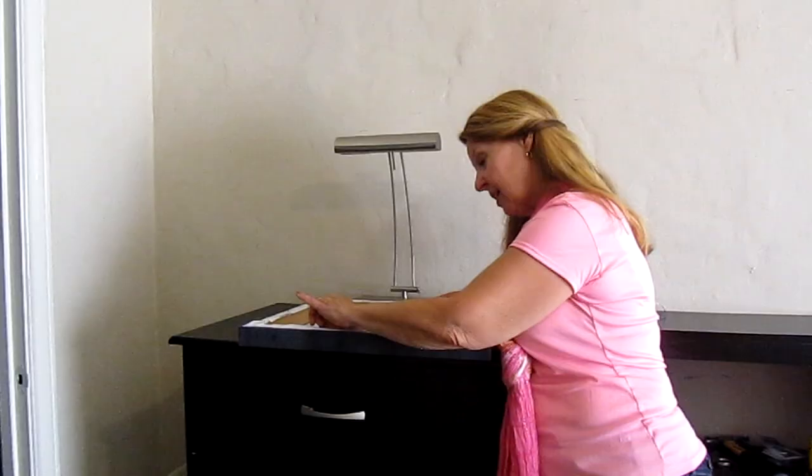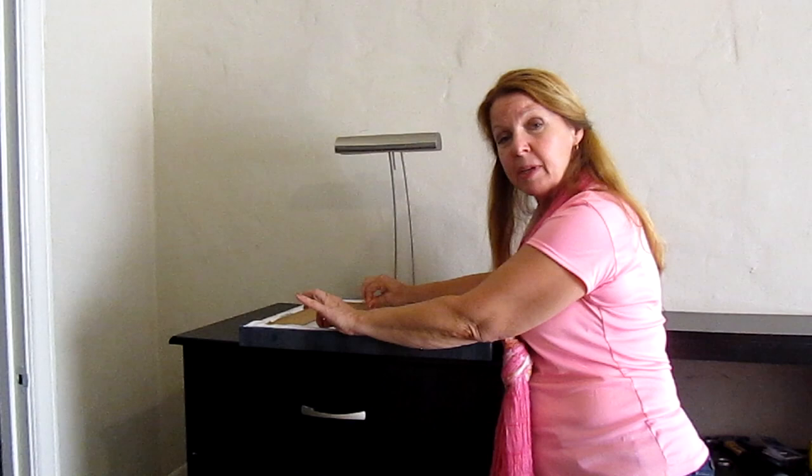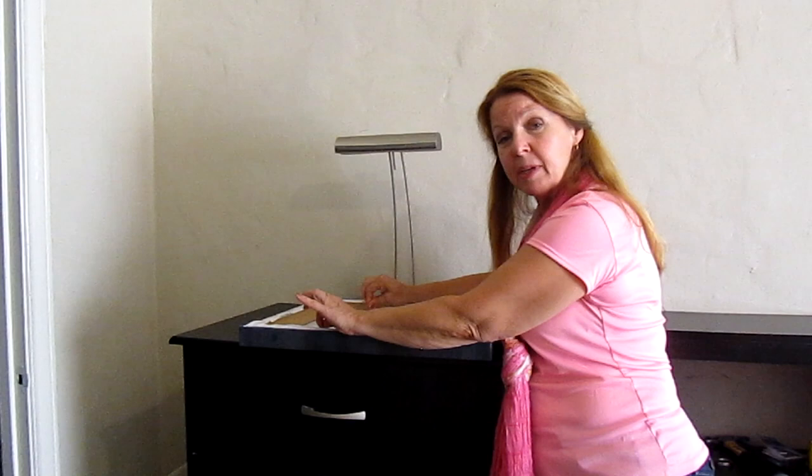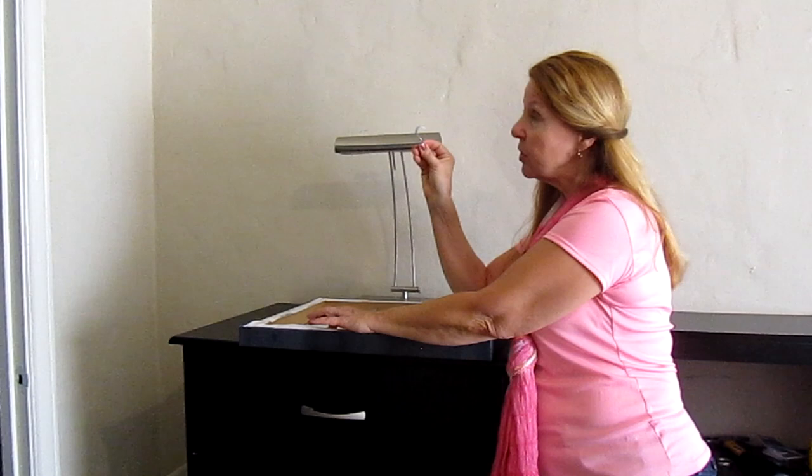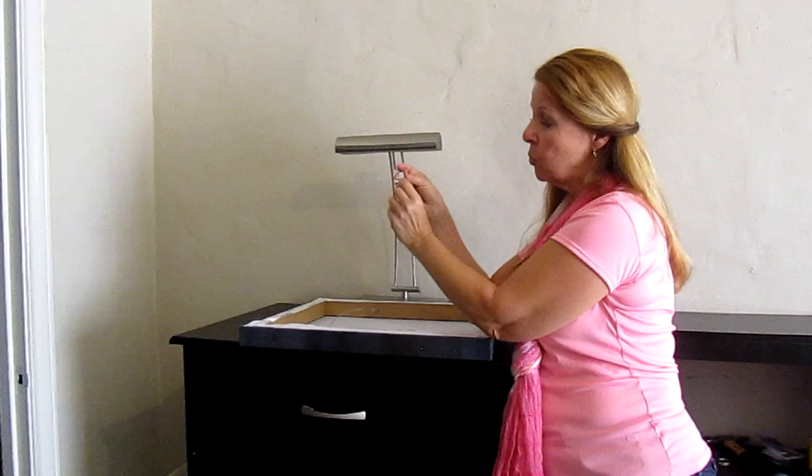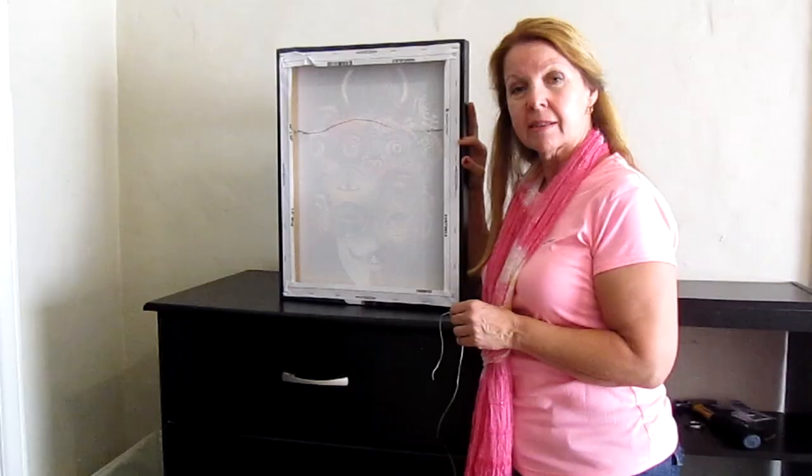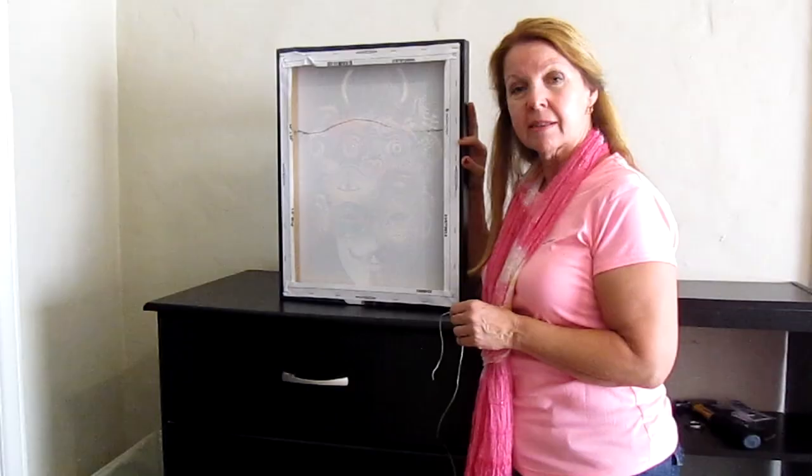I finished wrapping both ends. Now I'm going to take my picture hanger and hook the large end over the picture molding. Then the wire is going to hook over the hook.